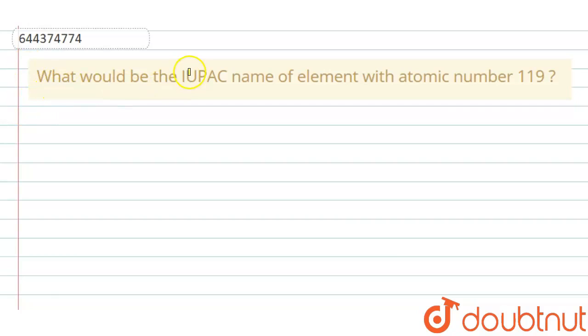The question is, what would be the IUPAC name of element with atomic number 119? So for writing the IUPAC names of the elements with atomic number greater than 100...